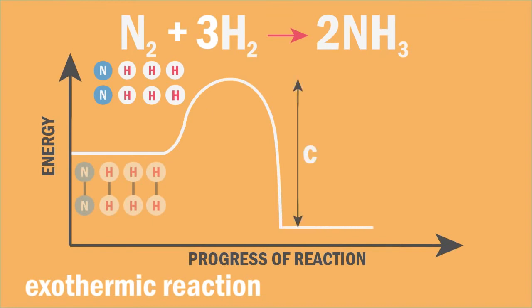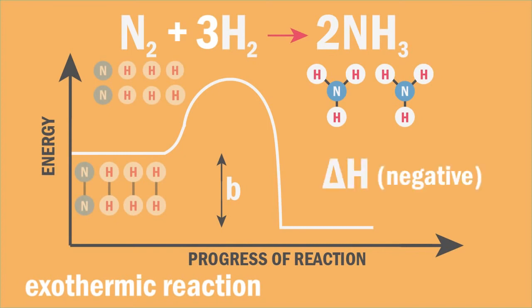C is the energy given out when the six new N-H bonds make to form the products, and B is the net energy given out during the reaction, delta H, which is the energy difference between the energy taken in to break the bonds in the reactants and the energy given out when the new bonds make to form the products.